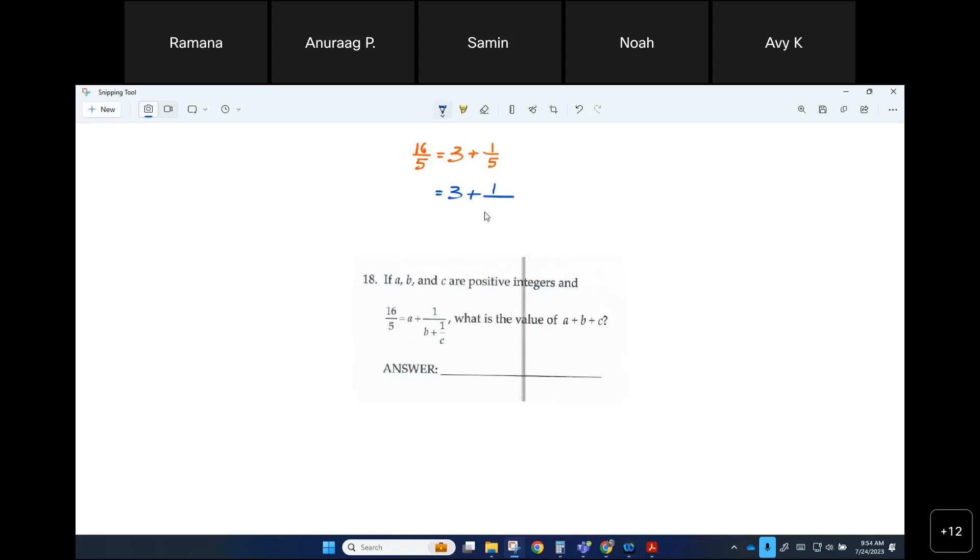I can write that as 4 plus 1 over 1. Do you all agree? Now, 1 over 1 is 1, 4 plus 1 is 5.